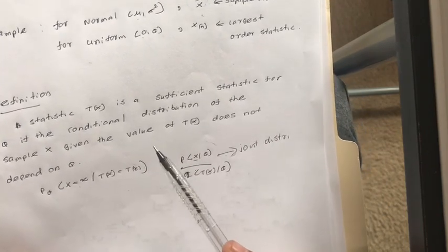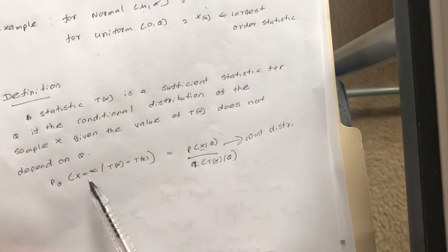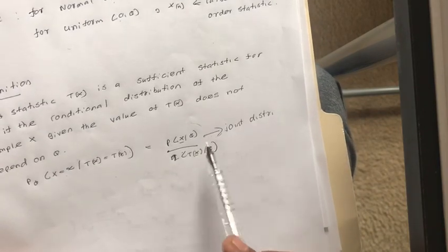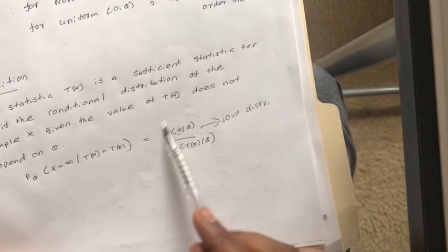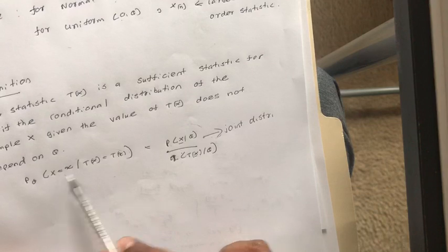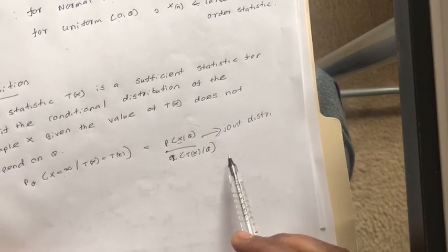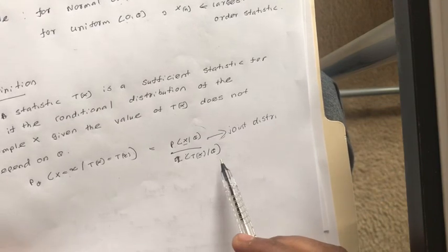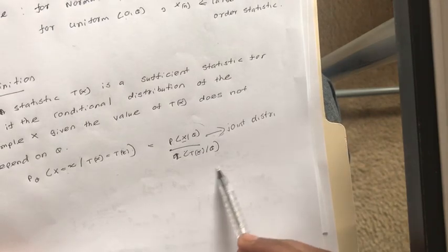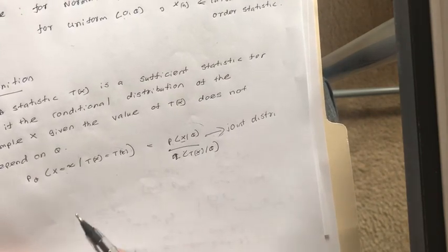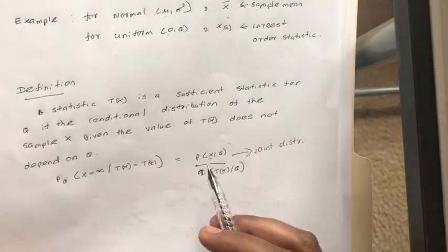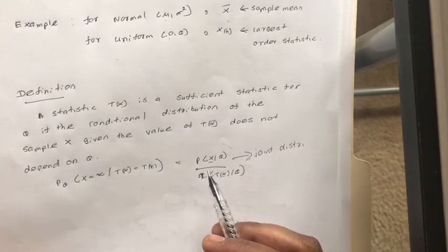That means we look at the ratio of two functions. The function in the numerator is the joint distribution of the X values, and the function in the denominator is the distribution of the sufficient statistic T(X). If T(X) is a sufficient statistic, then this ratio will not depend on theta. In order to use this definition, you should have a good intuition to guess in advance what your sufficient statistic will be.